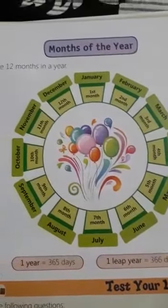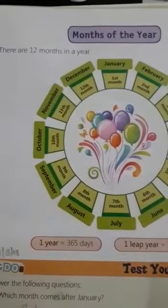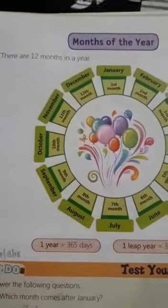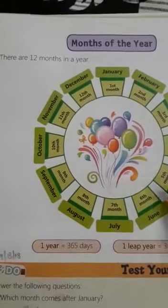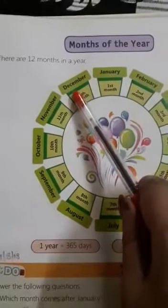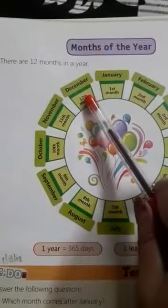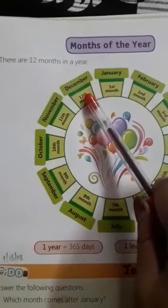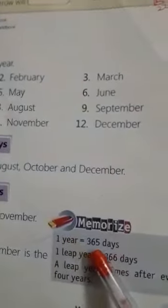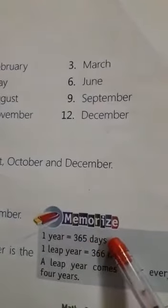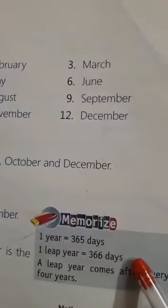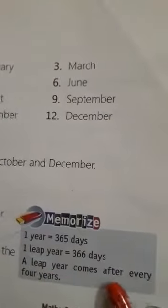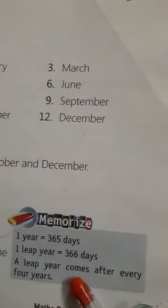So let's revise. How many months in a year? Yes, 12 months in a year. January is the first month and December is the last, or 12th, month of the year. One year equals 365 days, one leap year equals 366 days, and a leap year comes after every four years.